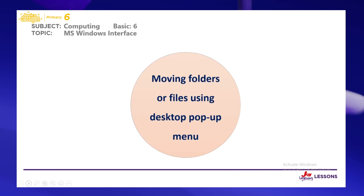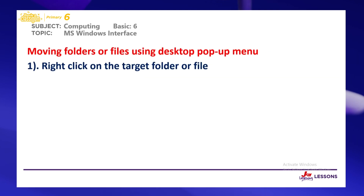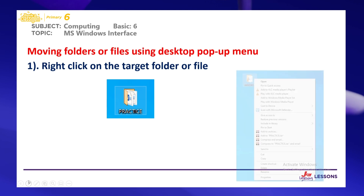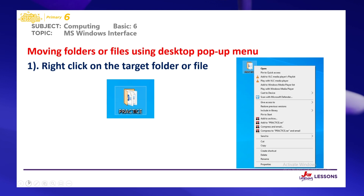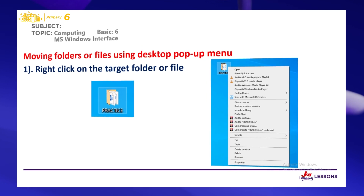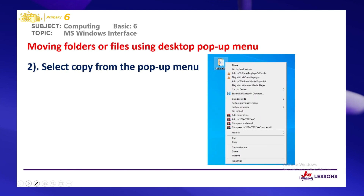We are moving folders or files using the desktop pop-up menu. In order to move your files or folders using the desktop pop-up menu, the first thing you do is right-click on the target folder or file on your desktop. Our target folder is named 'practice'. When you right-click, there will be a pop-up menu. From this pop-up menu, you select Copy.